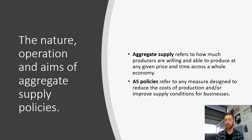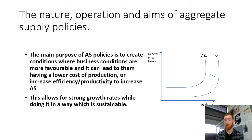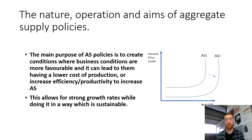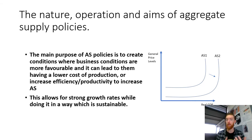The main purpose of aggregate supply-side policies is to create conditions that lead to more favourable situations where businesses are able to lower their cost of production or increase efficiency or productivity to increase their aggregate supply. This allows for strong growth rates in a way which is sustainable because we are not burning through more of our resources than we need to. This can be measured in a number of ways — one of the most common is GDP per hour worked. If we are getting more GDP or more production per hour worked by employees, that means we're being more efficient and using our resources more effectively.